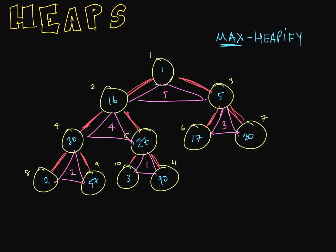We start here and take the larger of the two child nodes and swap it with the parent node if we need to. In this case, we have a child node, 90, that is larger than the parent node, so we swap 90 and 27. Now this little subtree is a max heap. Let's go to the next one — this is not a max heap because we have a child node greater than the parent, so we swap 57 and 30. Now this is a max heap.